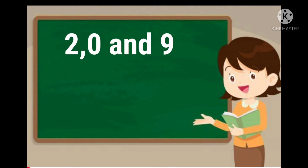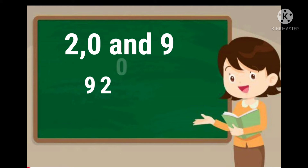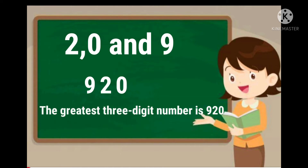Children, form the greatest three digit number using the digits 2, 0 and 9. Use each digit only once. First, let us arrange the digits in descending order. Here, 9 is the greatest digit, so we can write 9 first. 2 is the next greatest digit. 0 is the smallest digit. So, the greatest three digit number is 920.